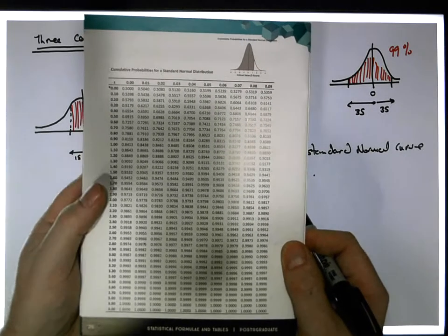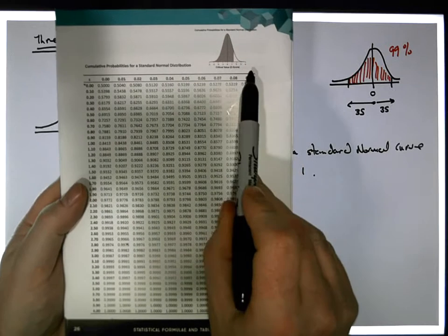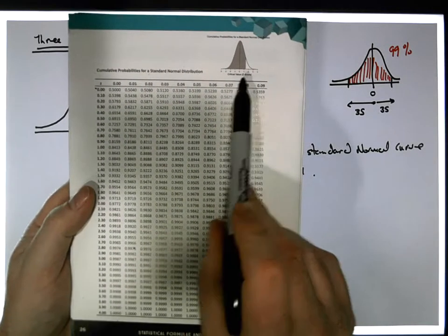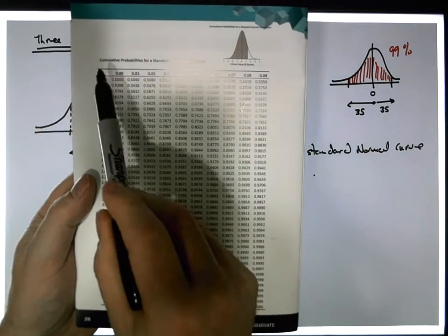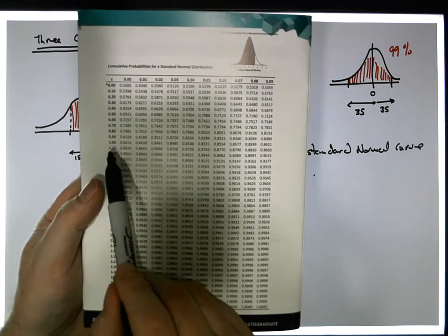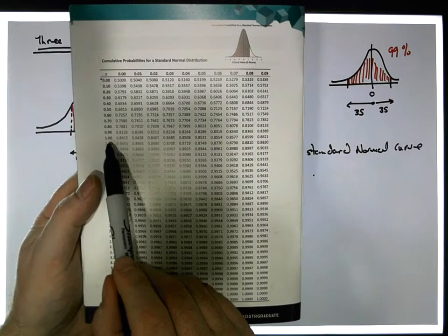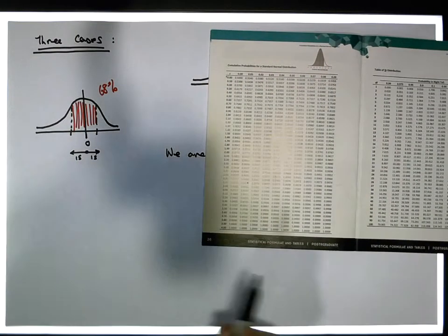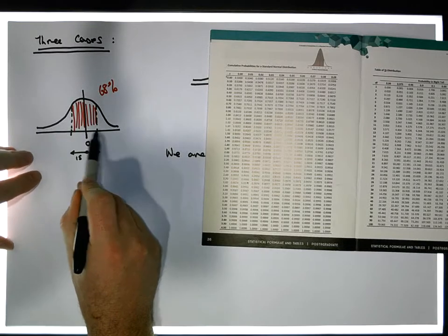In other words, the table gives us the area under the curve up to a specific value, and it's in standard units. So I can ask: what area is to the left-hand side of one standard unit? And that's what I'm going to do here. So I want to go one standard deviation.